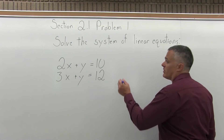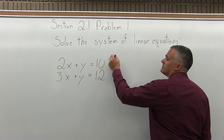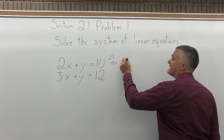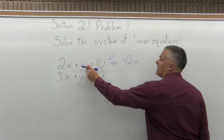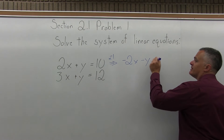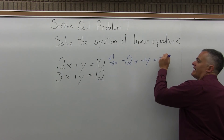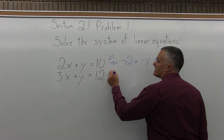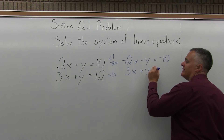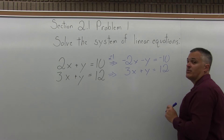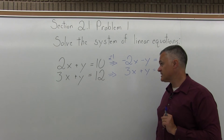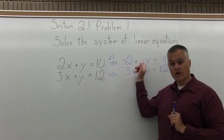So the top equation, I'm going to multiply everything times minus 1. Minus 1 times 2x is negative 2x. Minus 1 times y is minus y. And don't forget, minus 1 times 10 is minus 10. The bottom equation, 3x plus y equals 12, can just stay the way it is — no change. So Step 1 is complete: the y has the same number in front but with opposite signs — a positive y and a negative y.